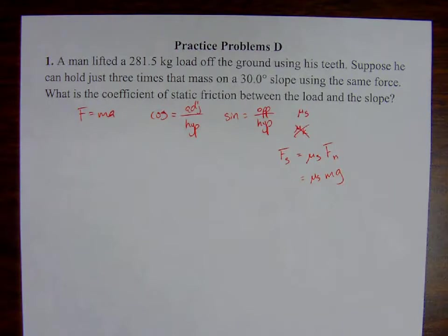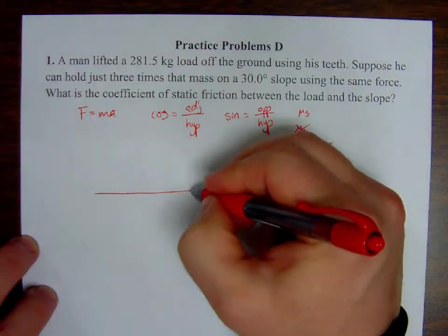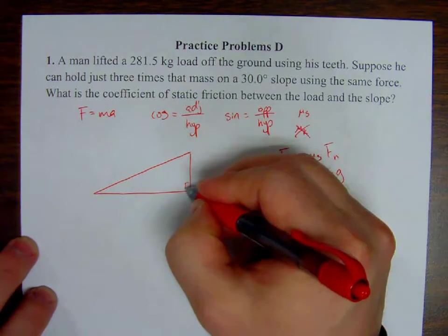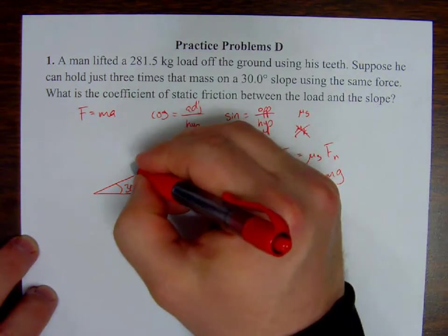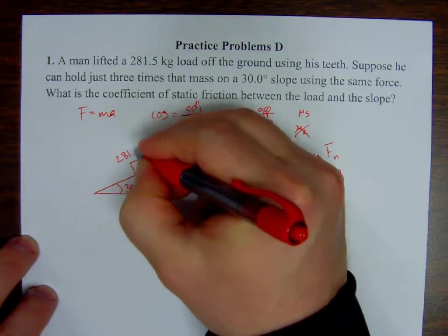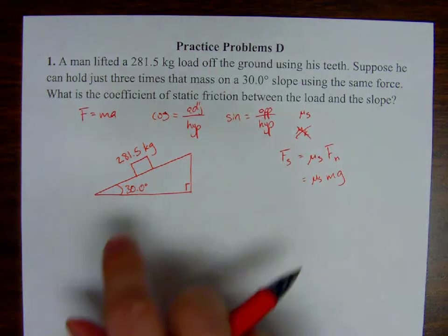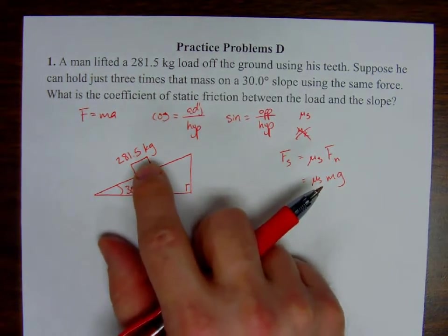Okay, let's draw the slope. So, right angle. There we go. 30.0 degrees. And then we have some mass on here that is 281.5 kilograms times three. Now, what's being claimed here is that this person can hold this thing steady without it sliding backwards, but also he's not exerting enough force to move it up the slope. It's stationary. So that's why we're going to end up using static friction, because the object is, in fact, not moving.